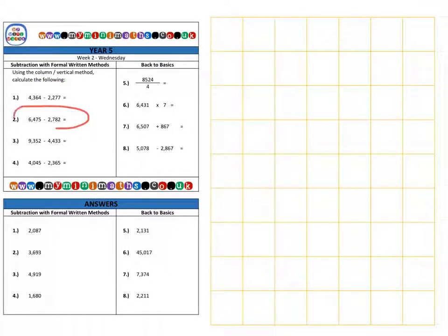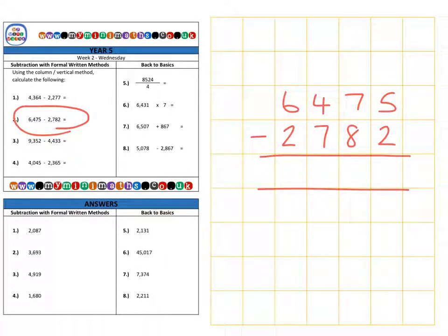Next, we're on to question two, which is 6,475, and we're going to subtract 2,782. First of all, our units column. So five subtract two gives us three, nice and easy.